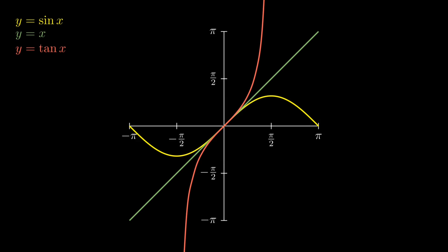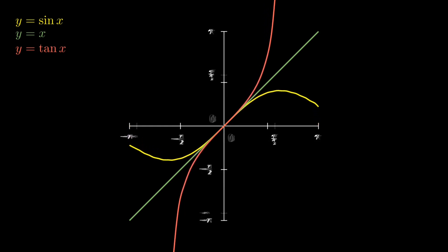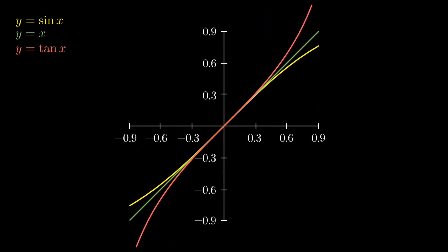Now, initially for the larger angles, we see that the functions clearly diverge. But when we zoom into the region around 0, we see an incredible closeness. Within this small range, all three curves practically overlap, confirming how reliable our approximation truly is.